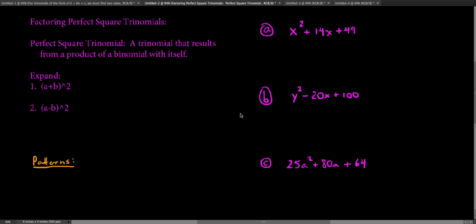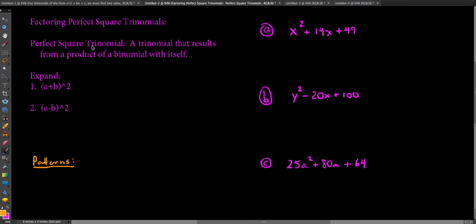Welcome back. In this video we're going to take a look at a special type of trinomial called a perfect square trinomial. Just like 25 is a perfect square because it is a square of 5 with itself, a trinomial that results from a product of a binomial with itself is what we consider to be a perfect square trinomial.